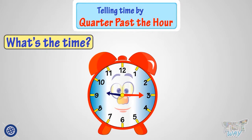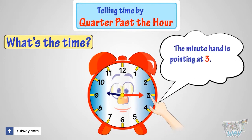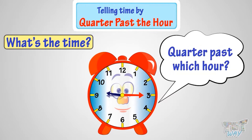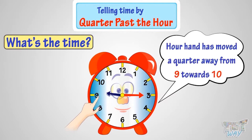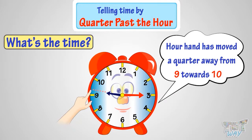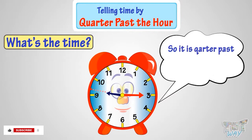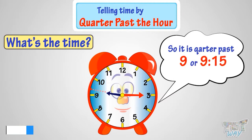Let's figure out the time on this analog clock. The minute hand is pointing at 3, so it's quarter past the hour. Quarter past which hour? The hour hand has moved a quarter away from 9 towards 10 — the dotted line points exactly a quarter away from 9 towards 10. So it is quarter past 9, or 9:15 as shown on a digital clock.